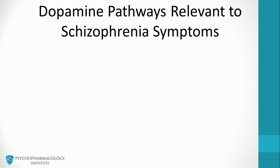As we discussed in the dopamine pathways video, there are four pathways key to antipsychotic pharmacology. Blockade of two of these pathways can lead to adverse effects, while the other two pathways are relevant to schizophrenia symptoms.